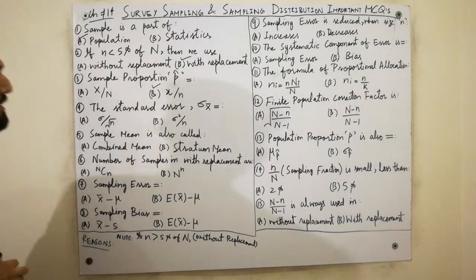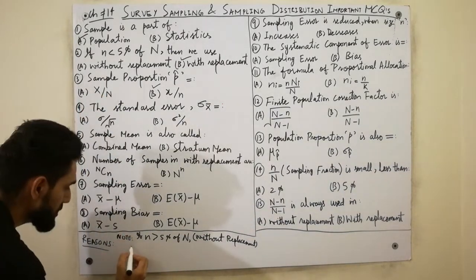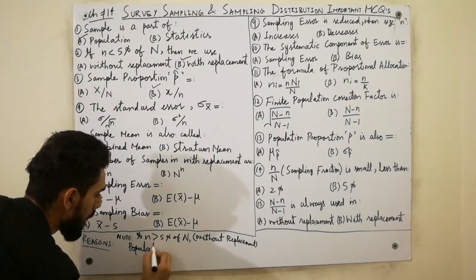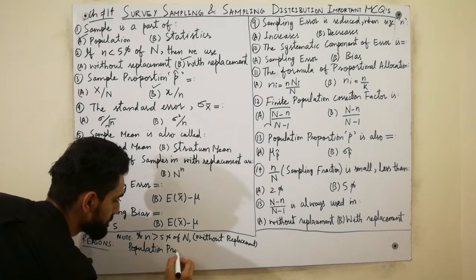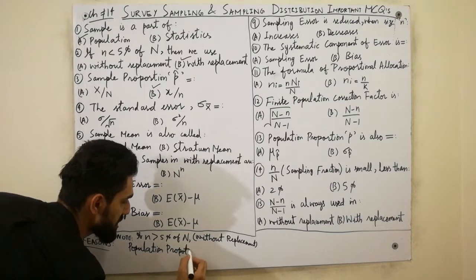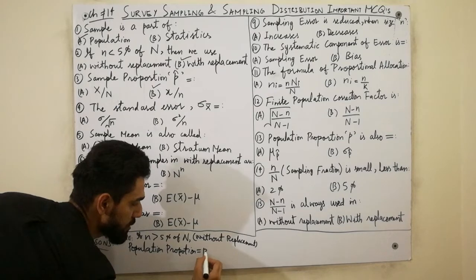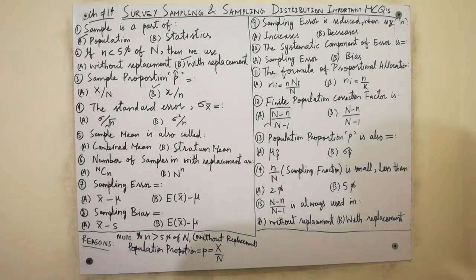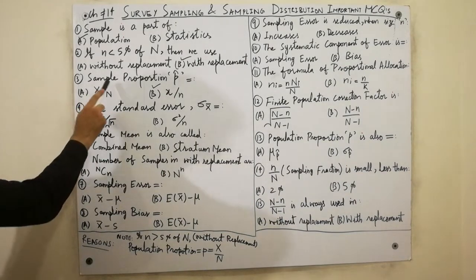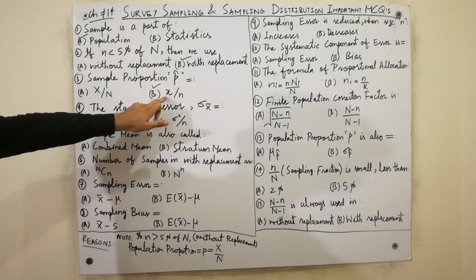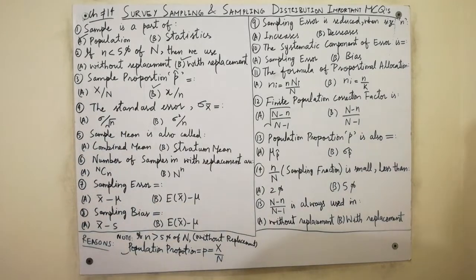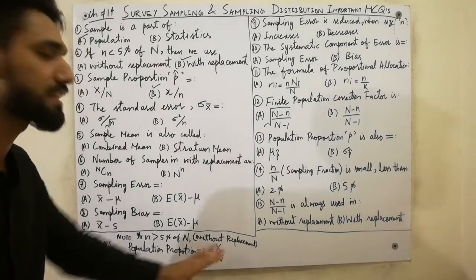The third MCQ: sample proportion p-hat is equal to small x over small n. We already know that. But population proportion small p is equal to capital X over capital N. Must remember: sample proportion p-hat equals small x divided by small n; population proportion small p equals capital X over capital N.